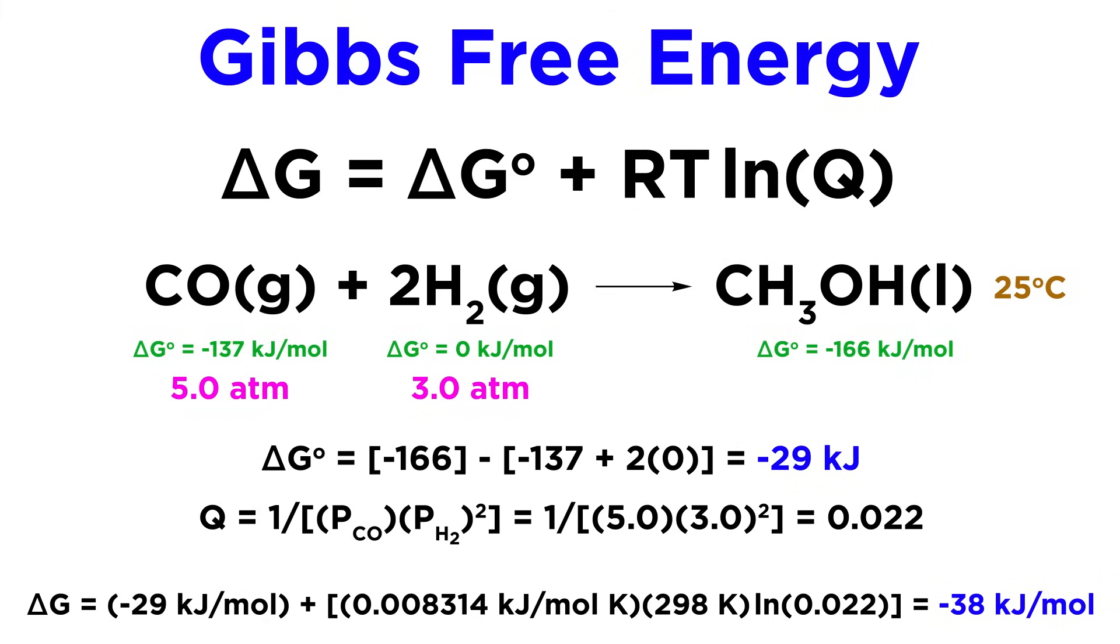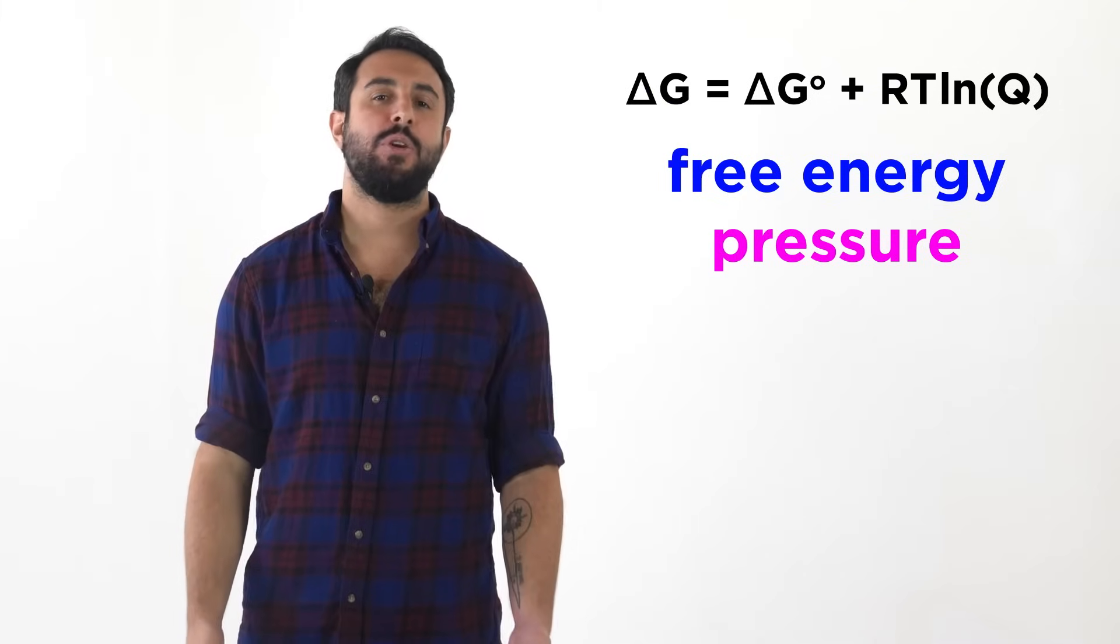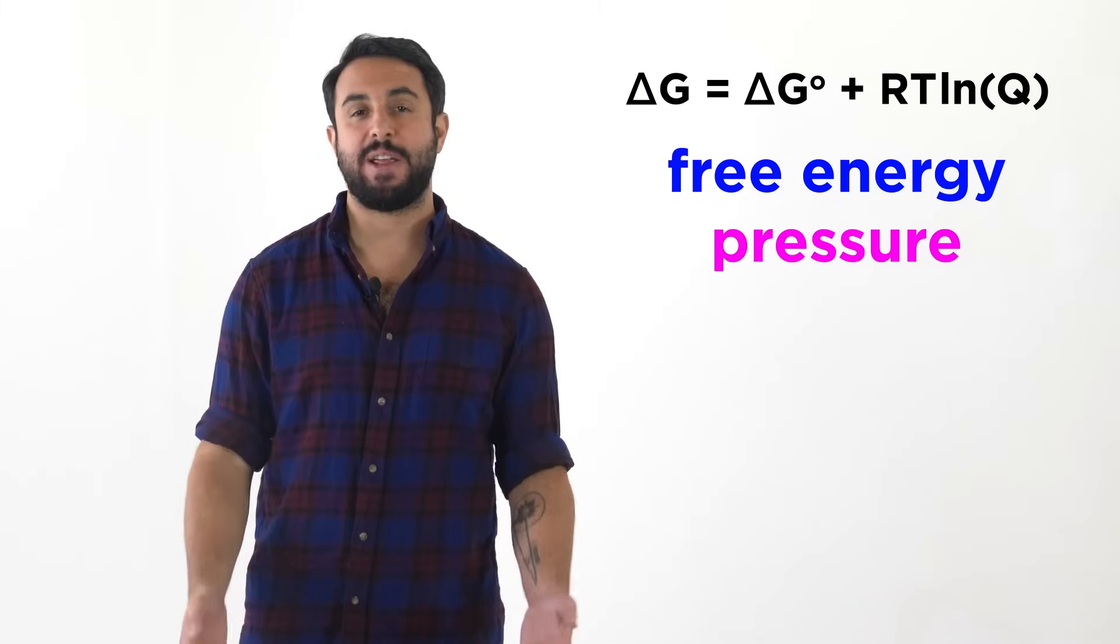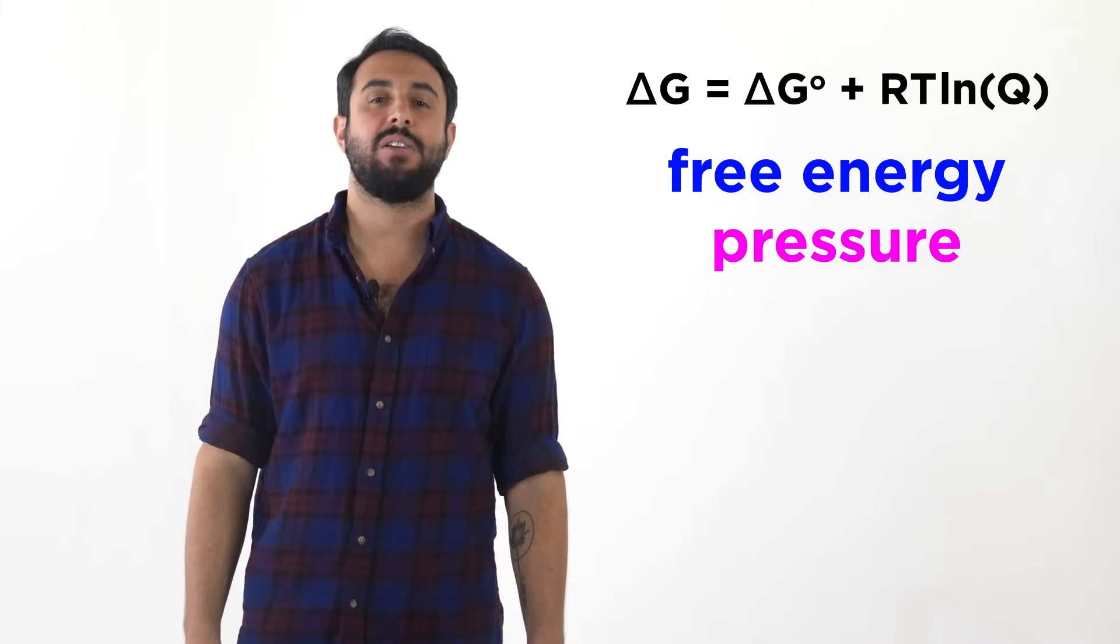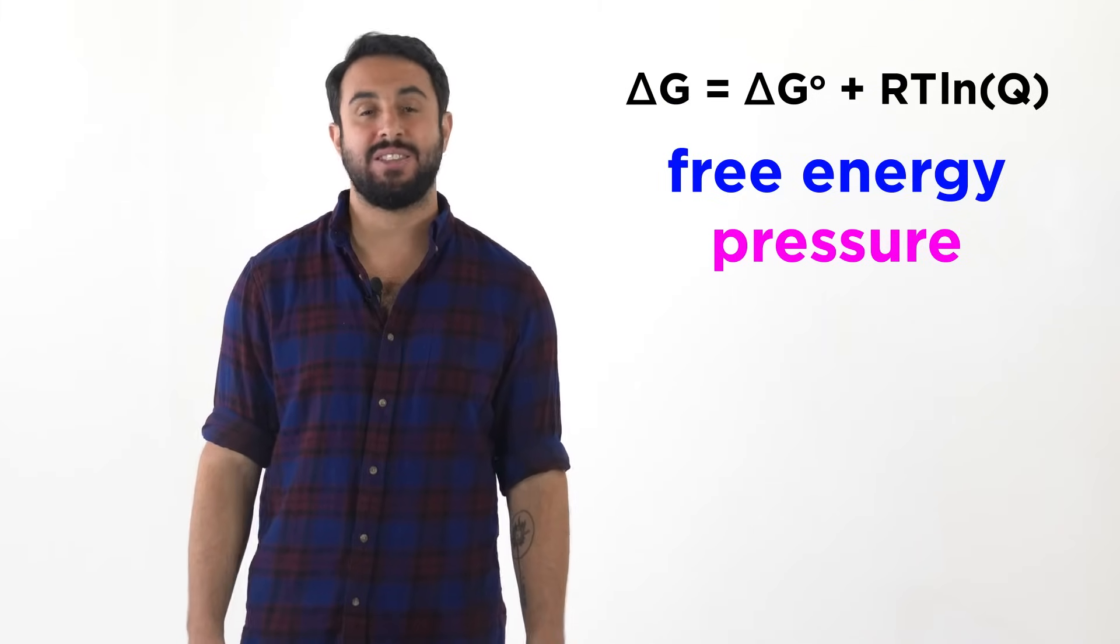This makes sense in the context of Le Chatelier's principle, as greater pressure for the reactants will drive the equilibrium forward toward the production of methanol. And with that we understand the dependence of free energy on pressure, and how to calculate delta G under non-standard conditions.